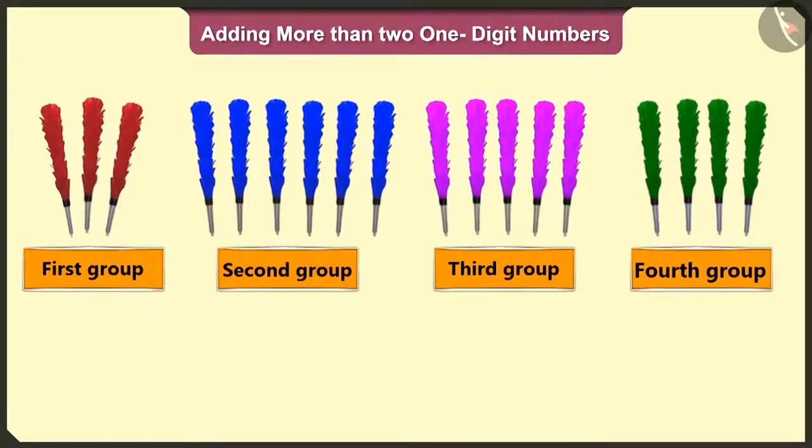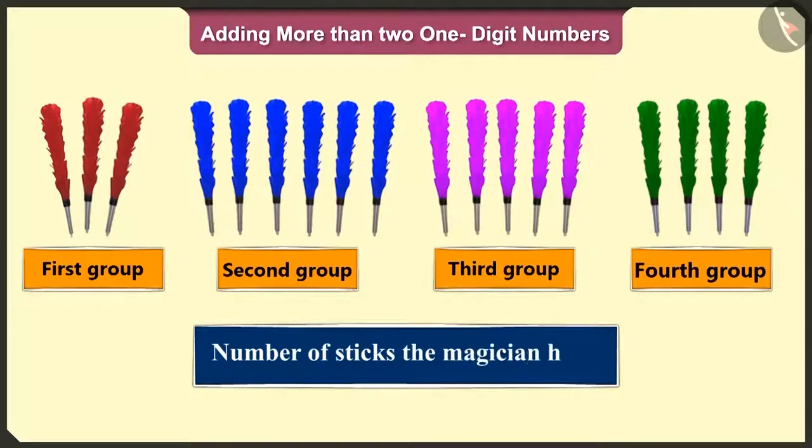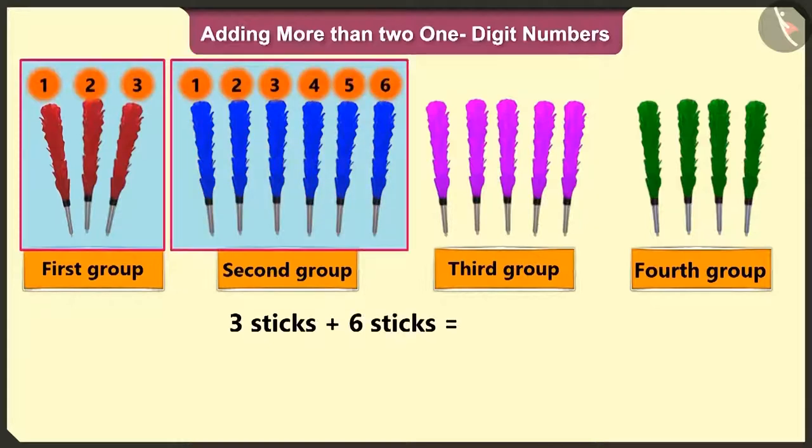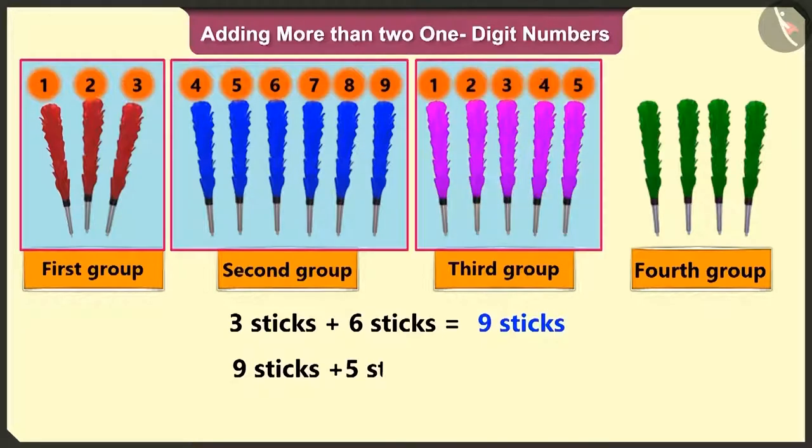So now, can you tell me the total number of sticks the magician has? Let us add three and six sticks and count after three, four, five, six, seven, eight and nine sticks. To these nine sticks, add five more sticks. So count after nine is ten, eleven, twelve, thirteen and fourteen sticks.